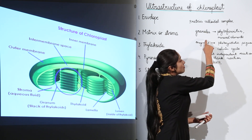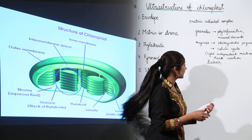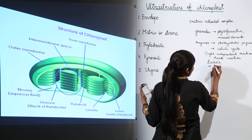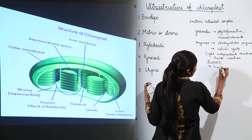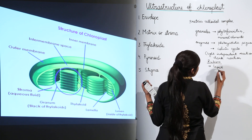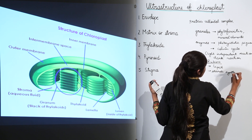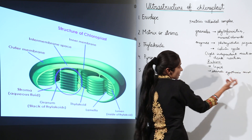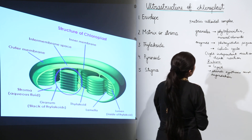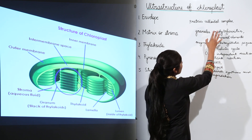These granules and enzymes, which are very important, are present in the matrix or stroma of the chloroplast. Besides the Calvin cycle, the enzymes also help in lipid and starch synthesis and degradation. This is how enzymes perform very important functions in case of the chloroplast.